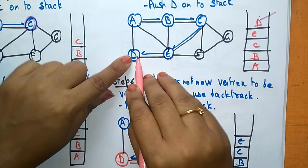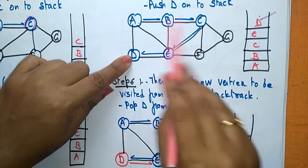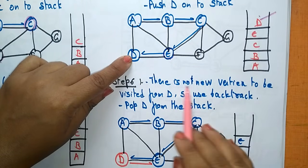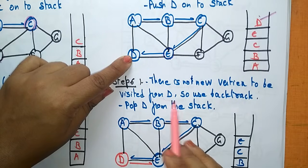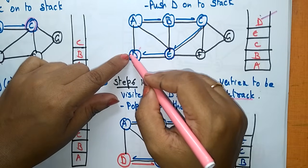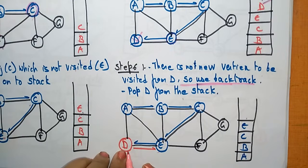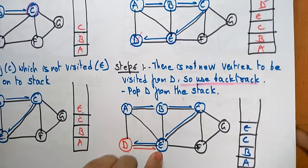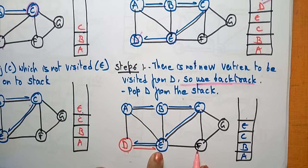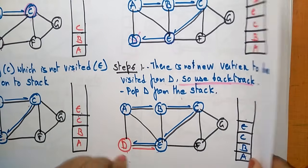Now at D, there is no new vertex to be visited — A, B, C, E are all already visited, shown as blue circles. So I use backtracking: pop D from the stack and come back. Back at E, the vertex not yet visited is F, marked in black. Visited vertices are marked blue, and deleted-from-stack vertices are marked red.